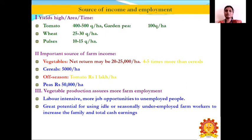The first main factor is that vegetables yield high produce in a shorter period of time. In tomato, we can get about 400 to 500 quintals per hectare, whereas in garden pea we can get about only 100 quintals per hectare, in wheat about 25 to 30 quintals, and in pulses about 10 to 15 quintals per hectare. Vegetables are also an important source of farm income — the net return may be about 25,000 rupees per hectare, which is 4 to 5 times more than cereals.